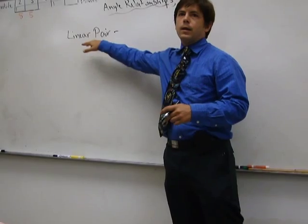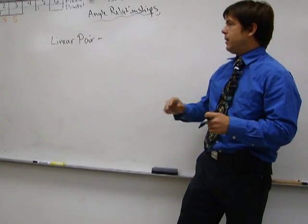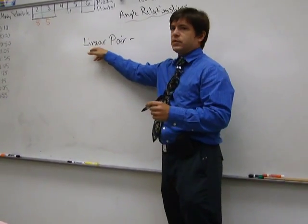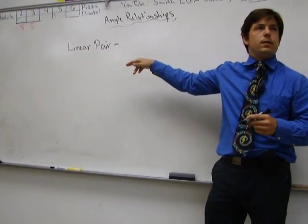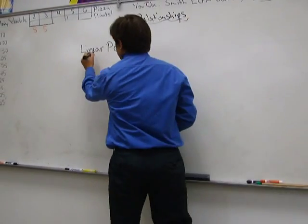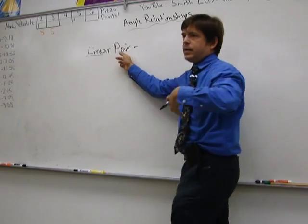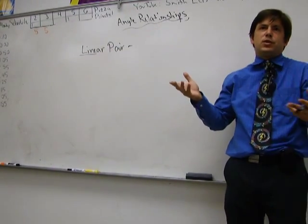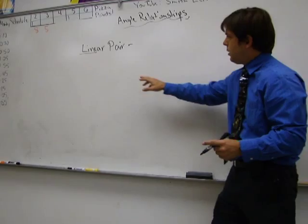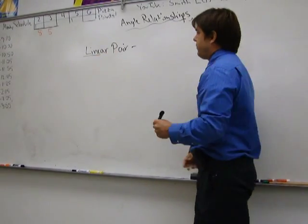Linear pairs. I want you to look at this word linear pair. What do you notice are the first four letters in linear? Line. So a linear pair, and does everybody know what a pair is? It's two things, right? So a linear pair is two angles that form a line.